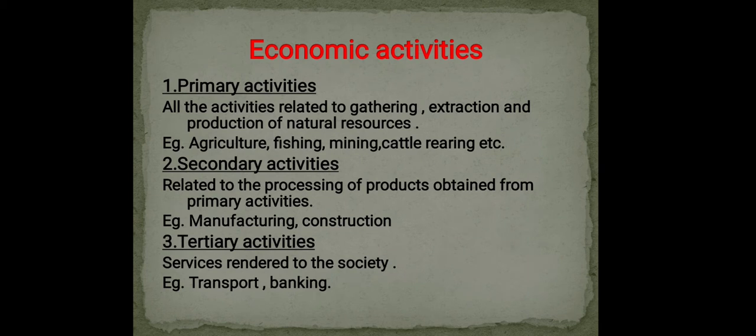Agriculture is a primary activity wherein people grow crops with the help of some tools. It is also known as farming. It is the oldest form of activity and is still prevalent in some areas of the world. India is known as a food self-sufficient country, wherein three-fourths of the population is dependent on agriculture.